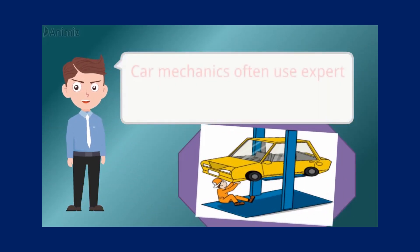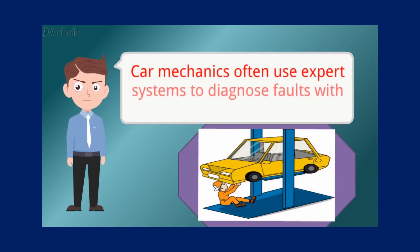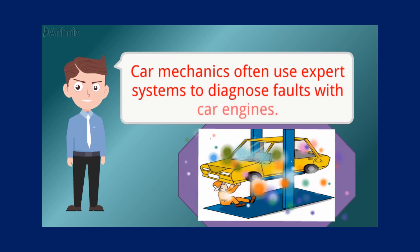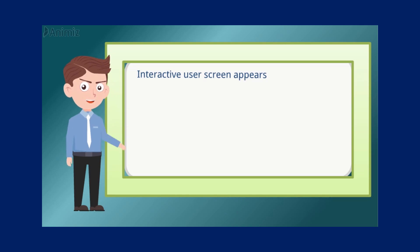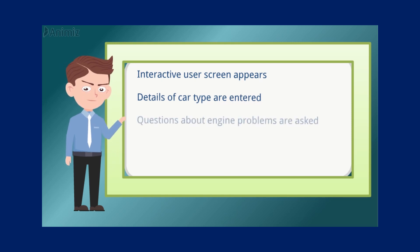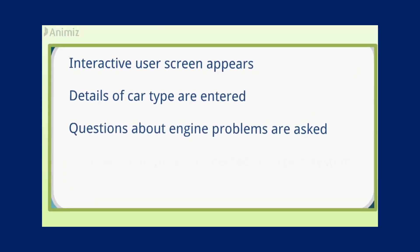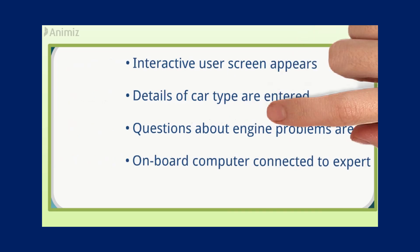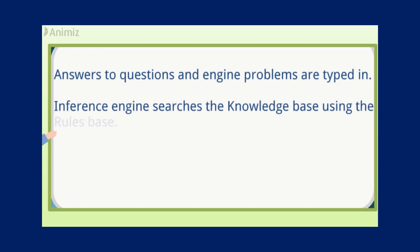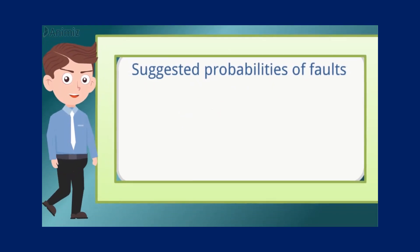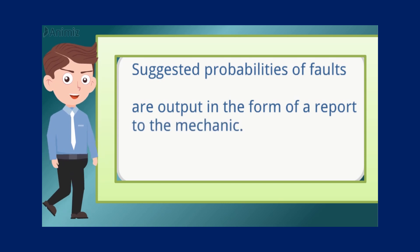Let's take a look at the first example where car mechanics often use expert systems to diagnose faults with a car engine. Here is how the system works: first, an interactive user screen appears and details of car type are entered. Questions about engine problems are asked and an onboard computer is connected to the expert system. Next, answers to questions about engine problems are typed in. Then the inference engine searches the knowledge base using the rule base, and suggested probabilities of faults are output in the form of a report to the mechanic.